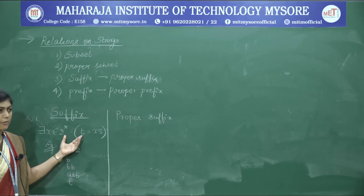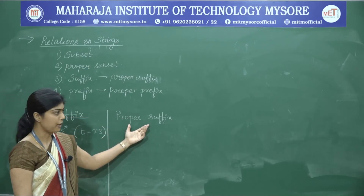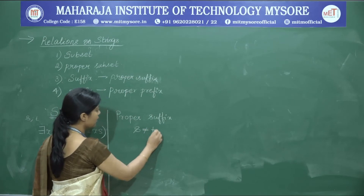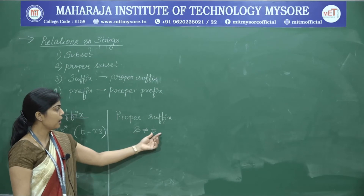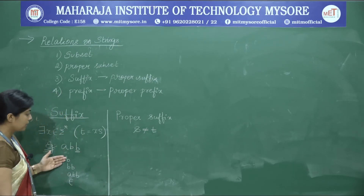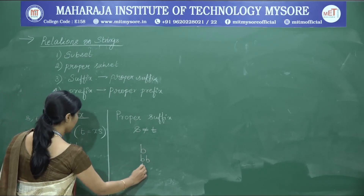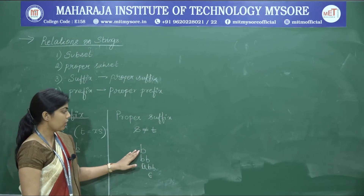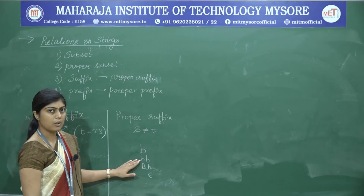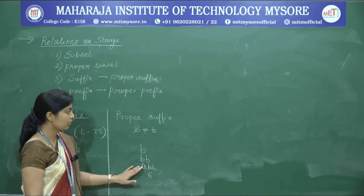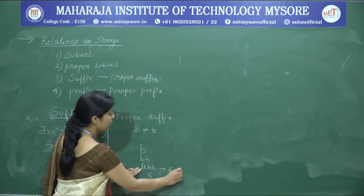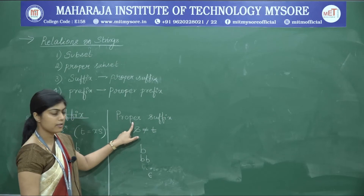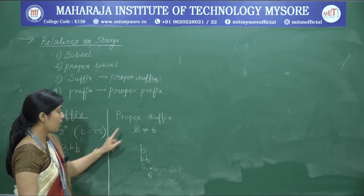Every property satisfied by a suffix must also be satisfied by a proper suffix, plus it must satisfy s ≠ t. So the suffix that we look at should not be equal to the original string. Among the suffixes of 'abb' — 'b', 'bb', 'abb', and epsilon — 'abb' equals 'abb', satisfying s = t, so it is not a proper suffix. The remaining ones — 'b', 'bb', and epsilon — are proper suffixes of 'abb'.